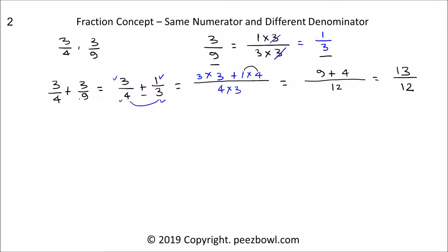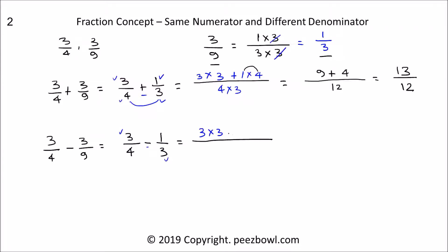Now we will see how to subtract these two fractions: 3 upon 4 minus 3 upon 9, or we can write it as 3 upon 4 minus 1 upon 3. For subtraction, we follow the same rule. For the numerator place, we multiply the first fraction's numerator with the second fraction's denominator, that is 3 multiplied by 3. Because we are subtracting, we write a minus symbol, then multiply the second fraction's numerator 1 with the first fraction's denominator 4. At the denominator place, we write 4 multiplied by 3. This equals 3 multiplied by 3 is 9, minus 1 multiplied by 4 is 4, divided by 4 multiplied by 3 is 12. This is equal to 9 minus 4 is 5 upon 12.